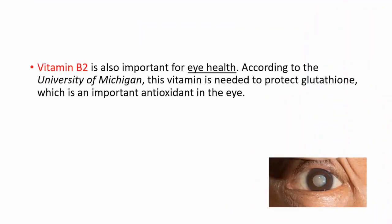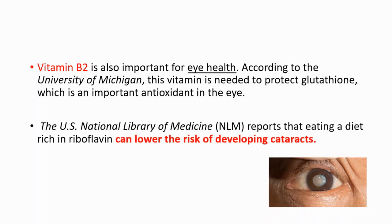Vitamin B2 is also important for eye health. According to the University of Michigan, this vitamin is needed to protect glutathione, which is an important antioxidant in the eye. The U.S. National Library of Medicine reports that eating a diet rich in riboflavin can lower the risk of developing cataracts.